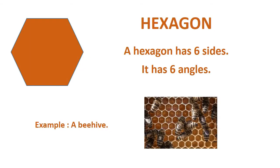Hexagon. A hexagon has six sides. It has six angles. Example: a beehive.